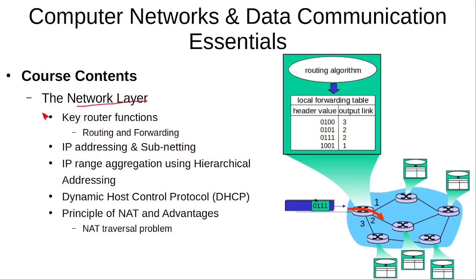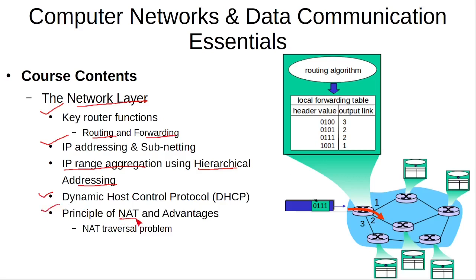Then we will move to the network layer, where we will discuss the key functions of a router — routing and forwarding — and how IP addressing and subnetting is done, and how hierarchical addressing is used to perform IP route aggregation in routers to reduce the size of routing table entries. We will also discuss the DHCP protocol, which is used to assign IP addresses to computers.